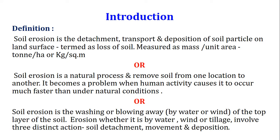It becomes a problem when human activity causes it to occur much faster than under natural conditions. Soil erosion is also defined as the washing or blowing away of the top layer of the soil. Soil erosion, whether it is by water, wind or tillage, involves three distinct actions: soil detachment, movement and deposition.